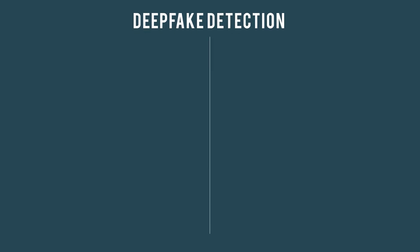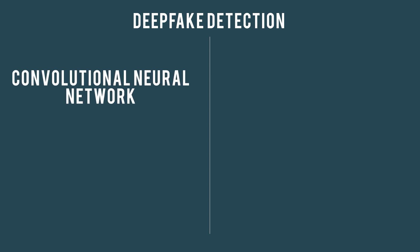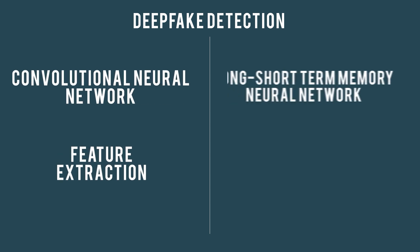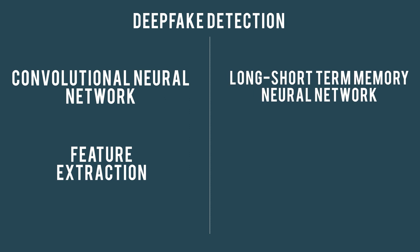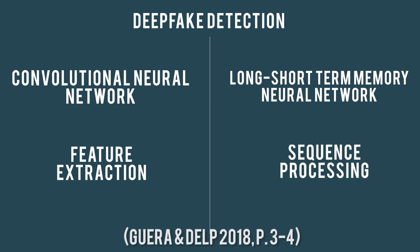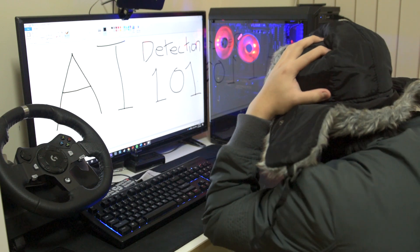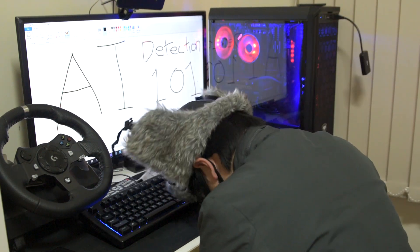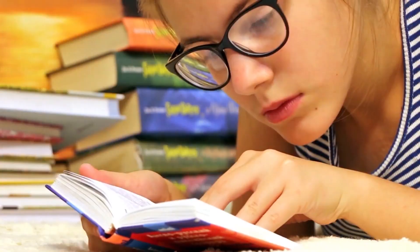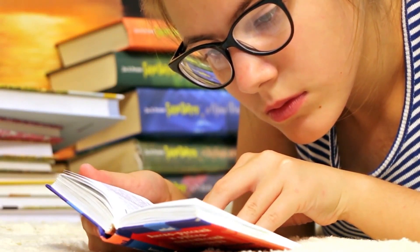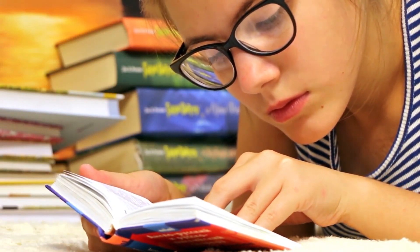However, as the saying goes, modern problems require modern solutions. People have been developing deepfake detection technology using convolutional neural networks (CNN) for feature extraction and long short-term memory neural networks (LSTM) for sequence processing. These are really complex to explain, so I'd recommend doing your own research — I'll leave a link to the reading I used for starters.